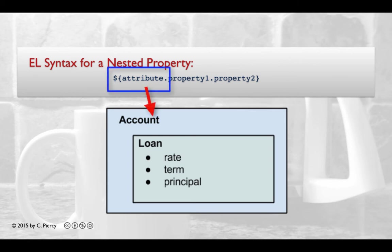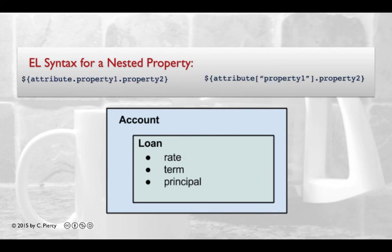The syntax for accessing nested property is still to use Java notation. In this case, the initial attribute here is the attribute that is stored at one of our scopes, followed by the property name, and then if that first property is an object, we might access one of its properties.